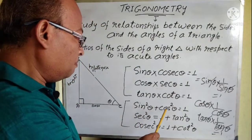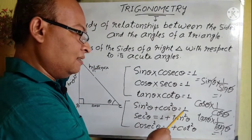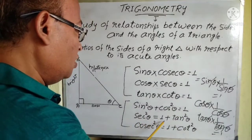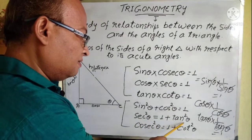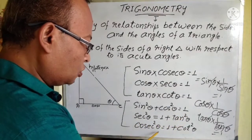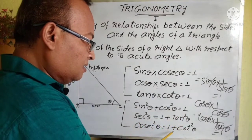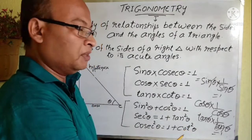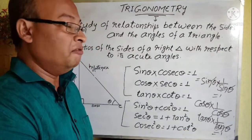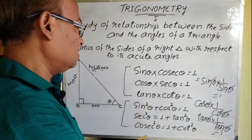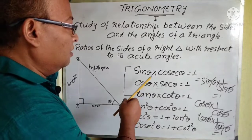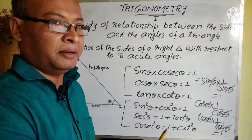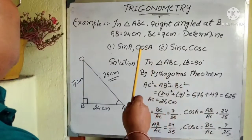Another set you have to keep in mind: sin squared theta plus cos squared theta is equal to 1. Sec squared theta is equal to 1 plus tan squared theta. And cosec squared theta is equal to 1 plus cot squared theta. We will be using these things in the sums.